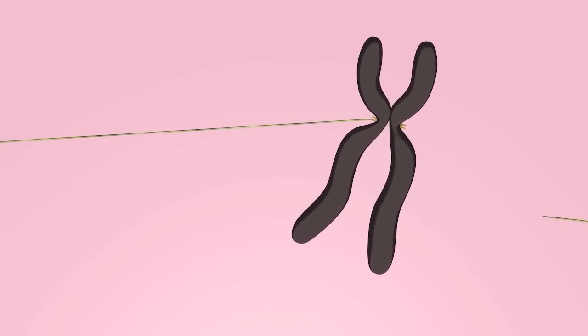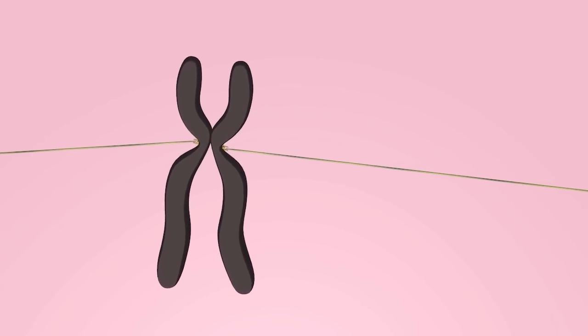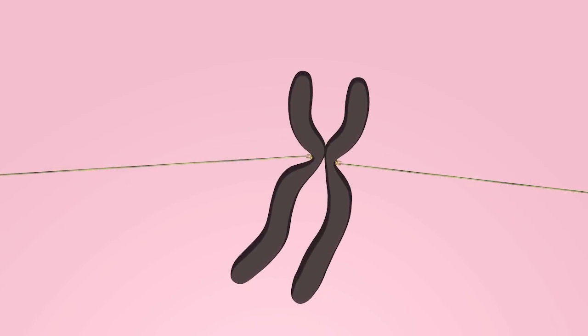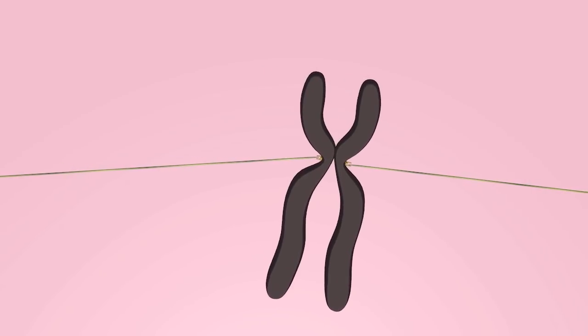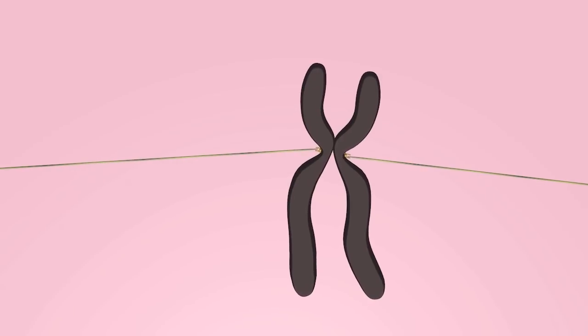This is where the association or cohesion between sister chromatids comes into play. The attachment of kinetochores of sister chromatids to microtubules from opposite spindle poles generates tension between the two sister chromatids and this signals to the cell that the attachment is correct and therefore can persist.